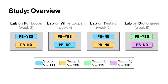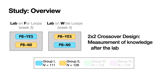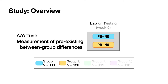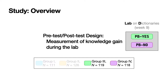In lab F, we used a 2x2 crossover design to measure differences in students' knowledge after the lab between the groups. In lab T, we used an AA test to determine any pre-existing differences between the groups, so everyone used the same programming environment. And in lab D, we would like to measure students' knowledge gain on dictionaries during the lab, so we adapted a pre-test post-test design and re-assigned groups.